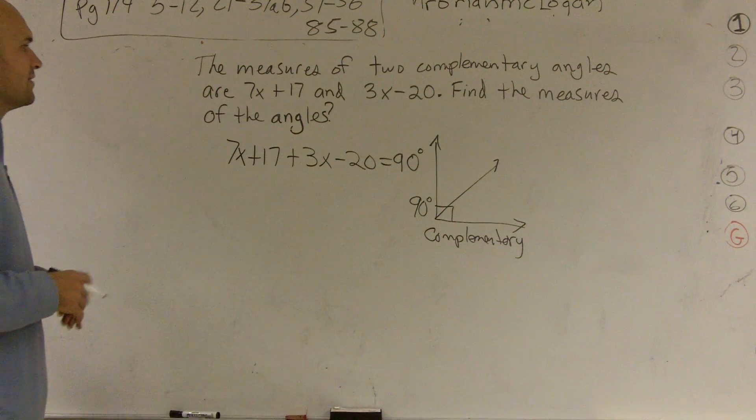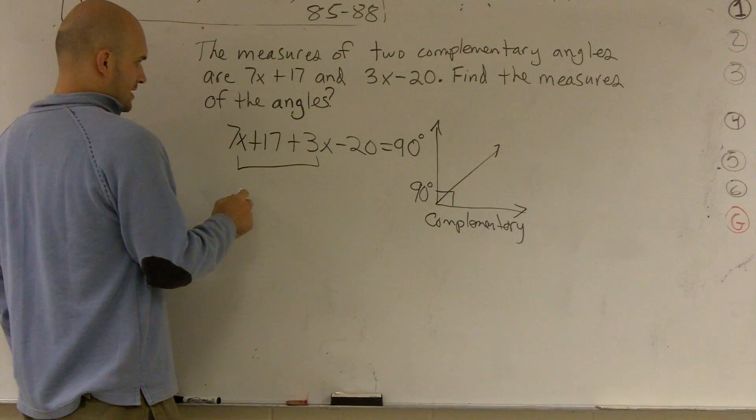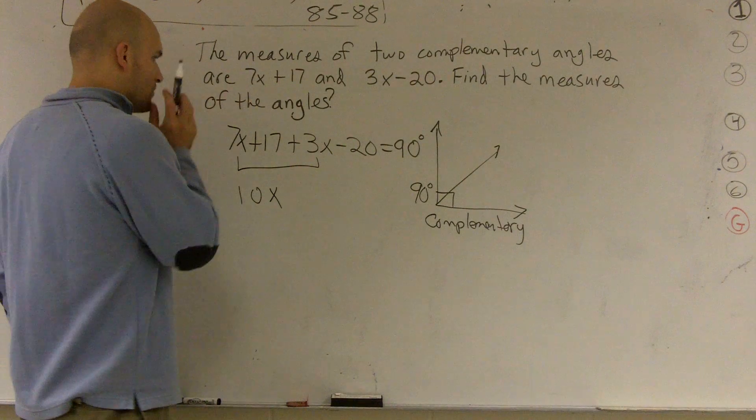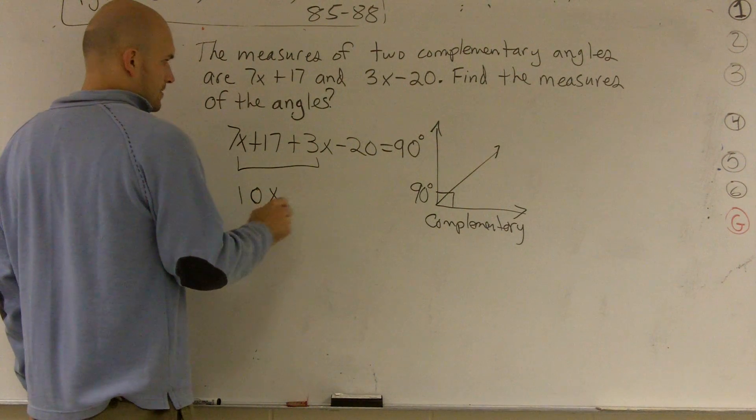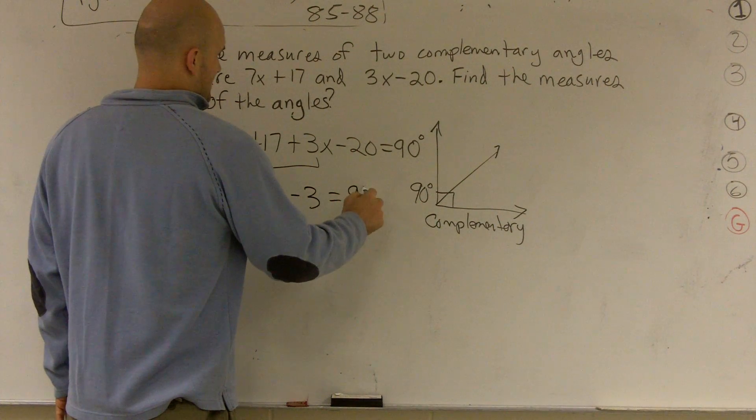So the next thing we need to do now is combine our like terms. Here, I can get 10x and 17 minus 20 is going to give me a negative 3 equals 90.